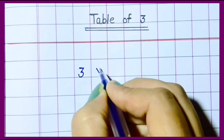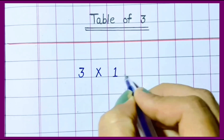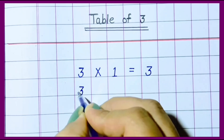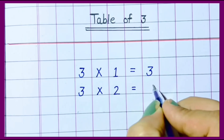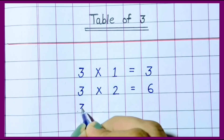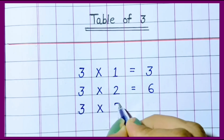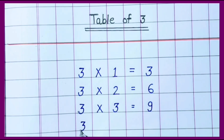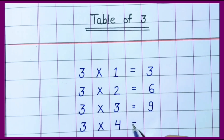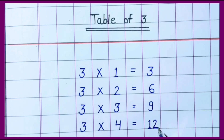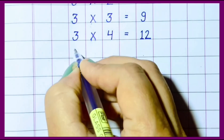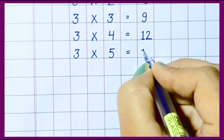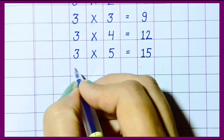3 times 1 is 3. 3 times 2 is 6. 3 times 3 is 9. 3 times 4 is 12. 3 times 5 is 15.